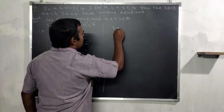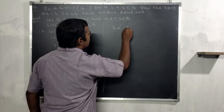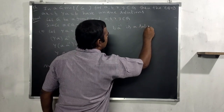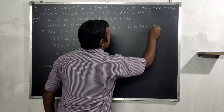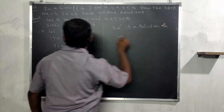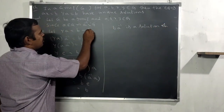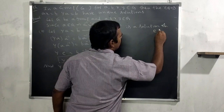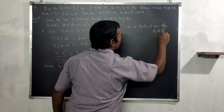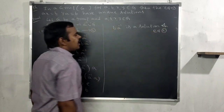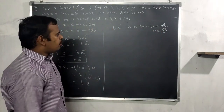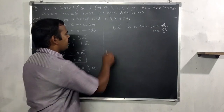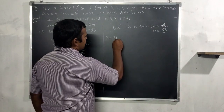Therefore ba inverse is a solution of equation two. To prove uniqueness, suppose ya = b has two solutions.